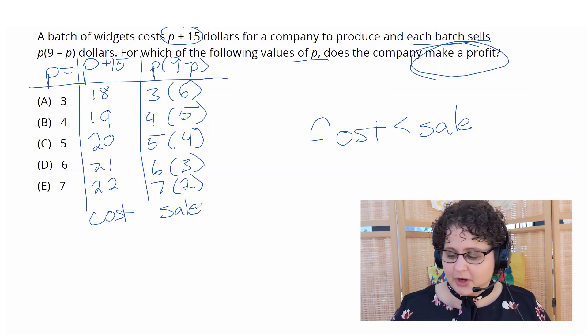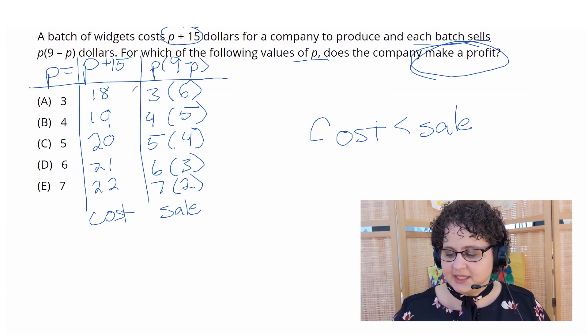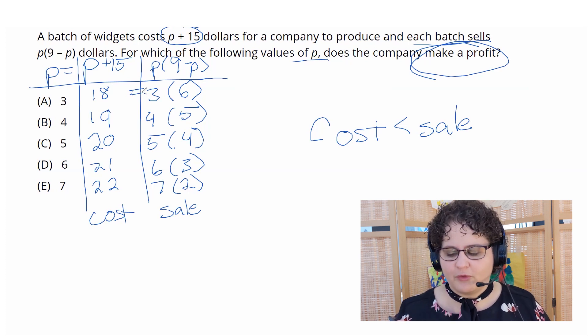All right, so for A, I'm comparing 18 to 3 times 6. That is 18. So no, that doesn't work for us.